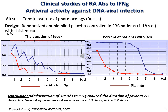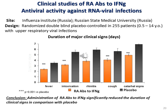Clinical effectiveness against DNA viruses was confirmed in a study on children with chickenpox. A randomized double-blind placebo-controlled study in 236 patients showed a significant decrease of clinical signs in the release active antibodies group compared with the placebo group. A randomized double-blind placebo-controlled study in 255 patients with respiratory viral infections, mostly flu, also showed a significant decrease in the main clinical symptoms: cough, fever, intoxication, rhinitis, and catarrhal signs.